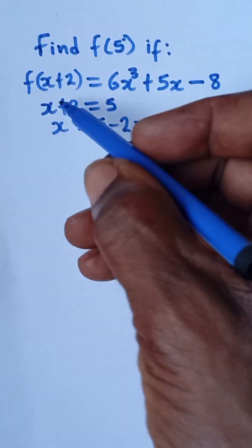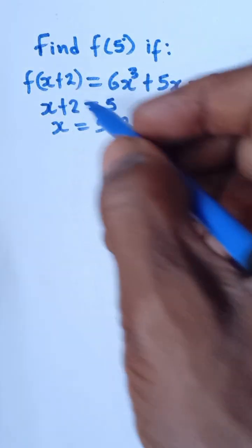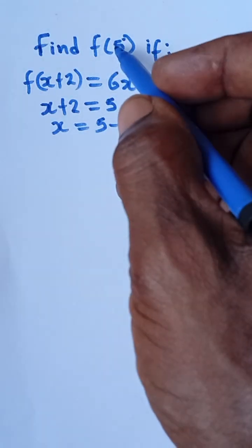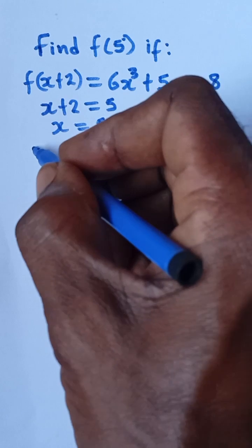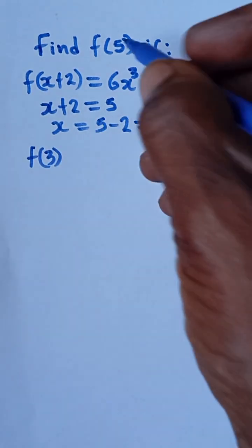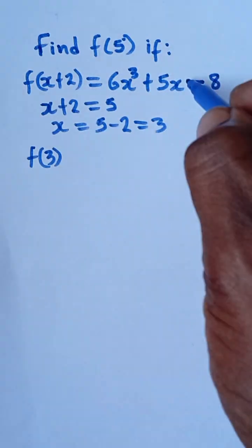So what that means is that I'm going to put 3 in this expression. Putting 3 in this expression will give me my f of 5 that I'm looking for. So I'm going to say f of 3 now, which is equivalent to f of 5 in this expression.